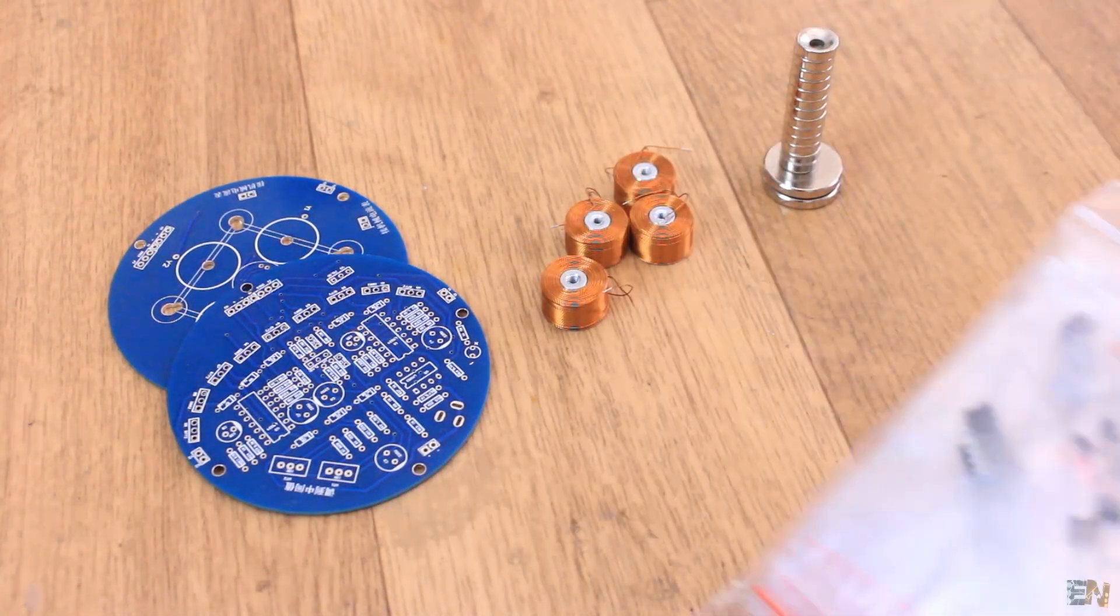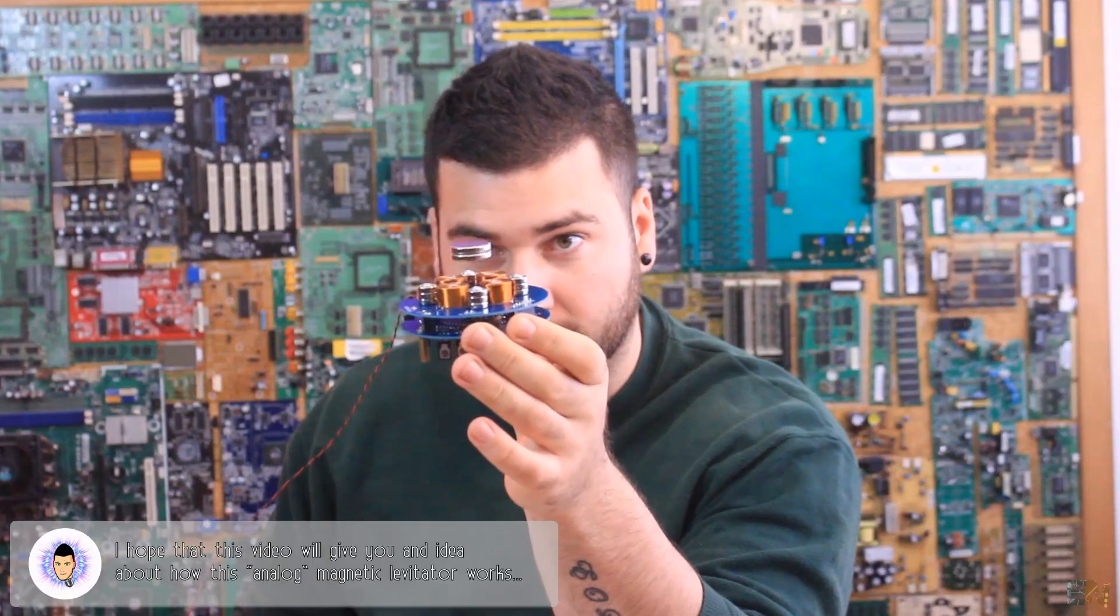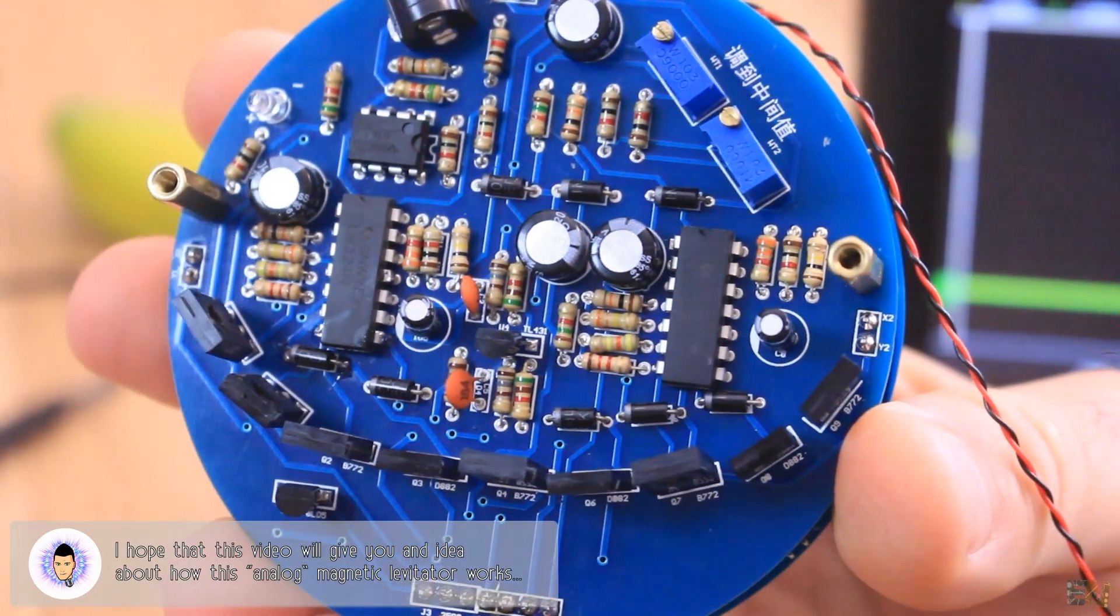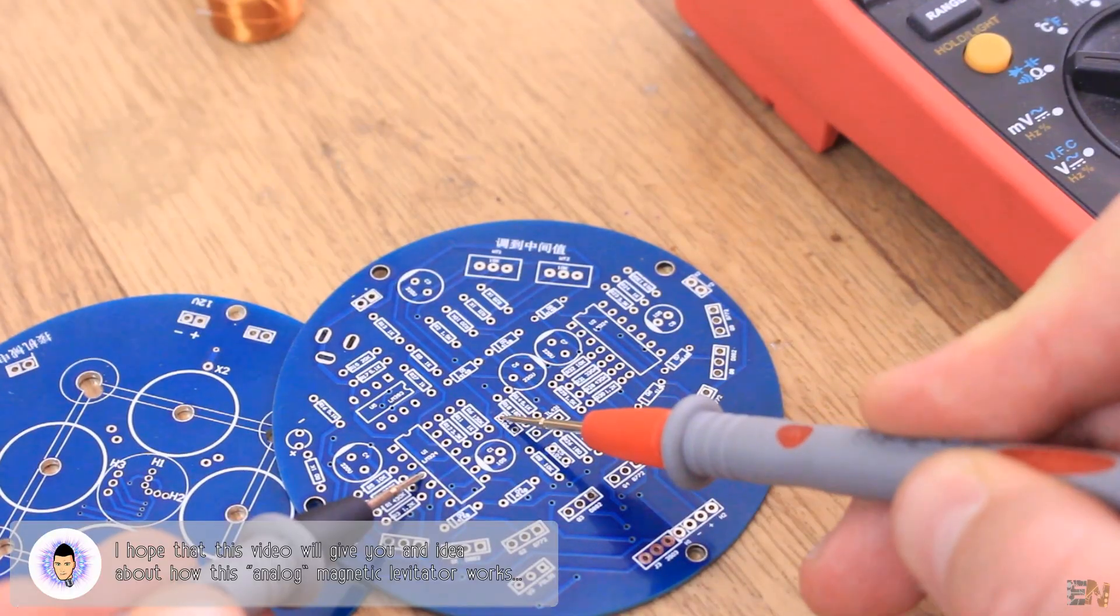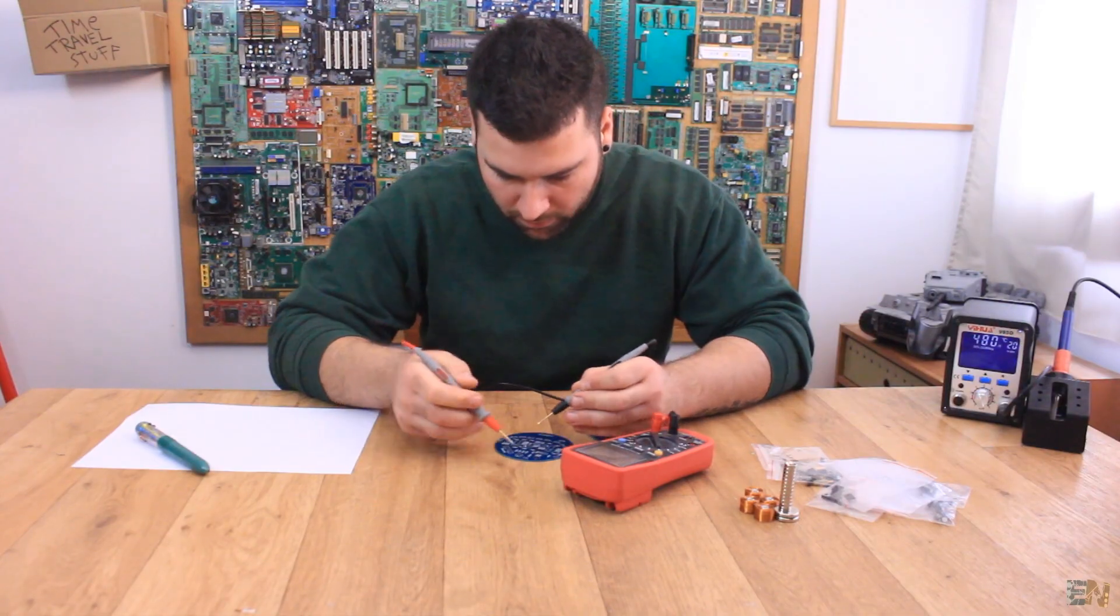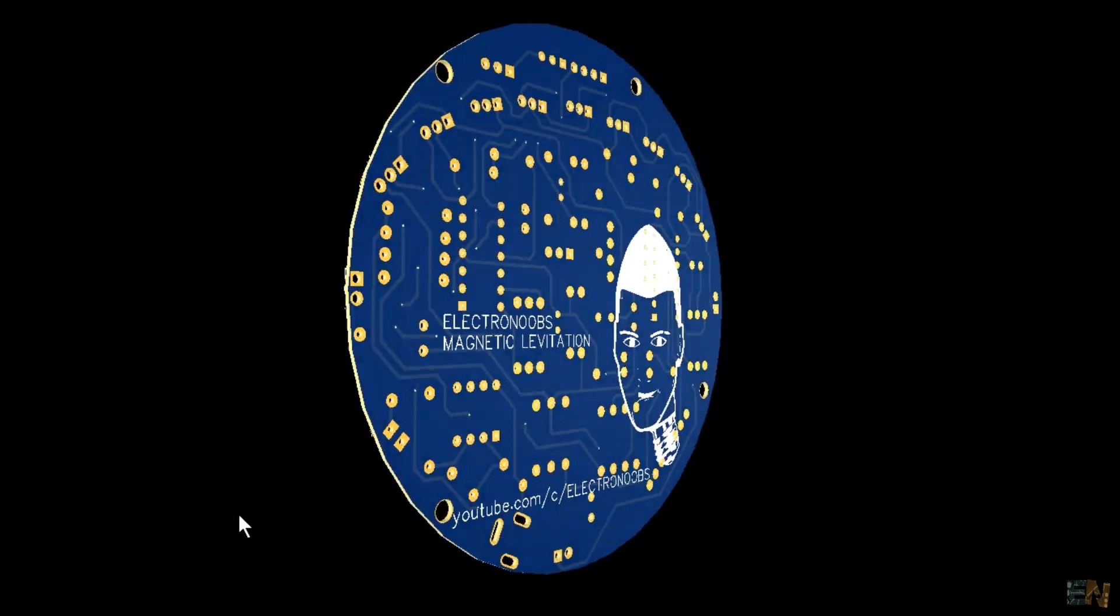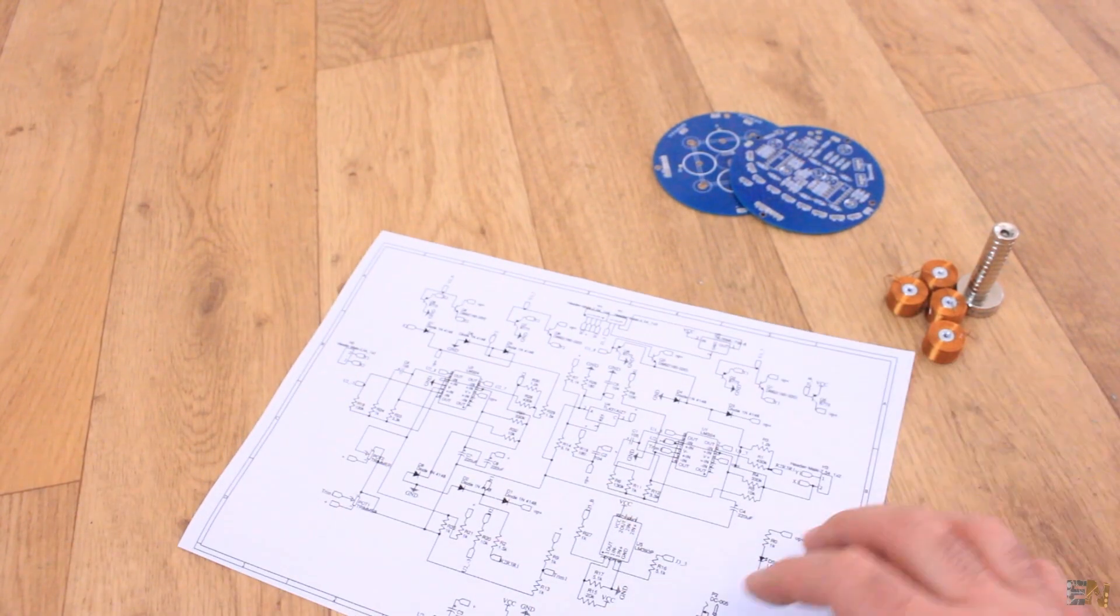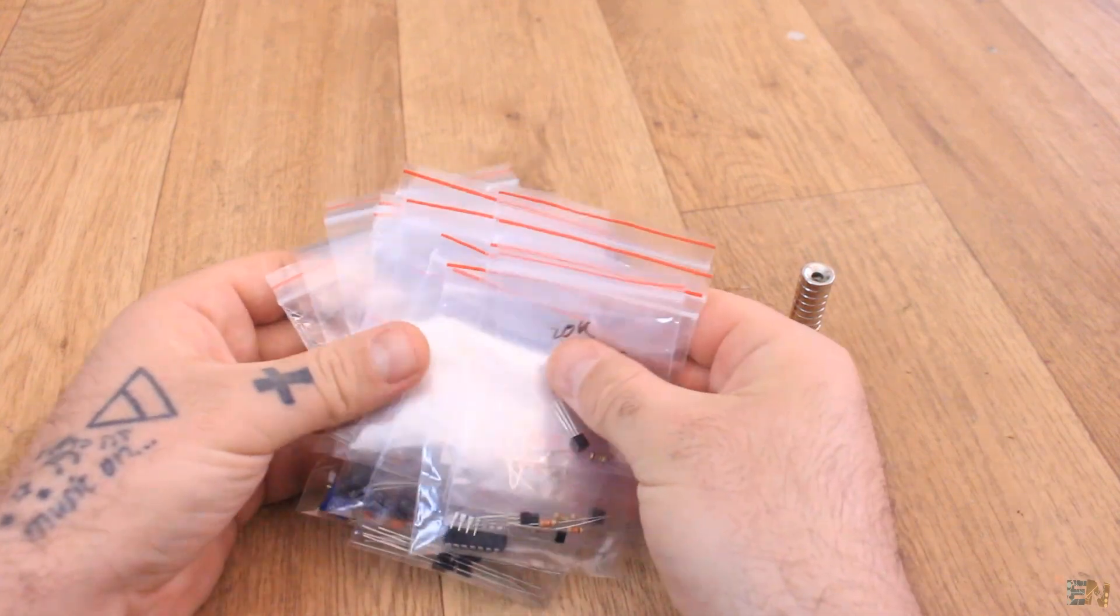This is a so-called analog magnetic levitator because it has no microcontroller, just operational amplifiers and transistors. I've reverse engineered and made the same circuit and PCB. I'm sharing all the files you need below this video. I will show you all the components and boards for this kit and tell you why we need each component.